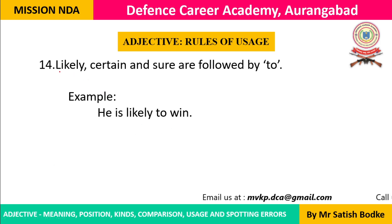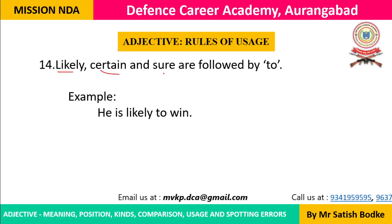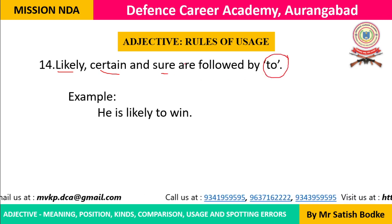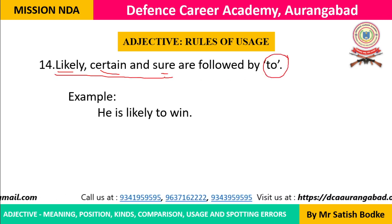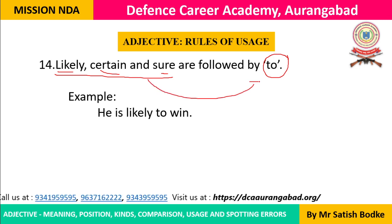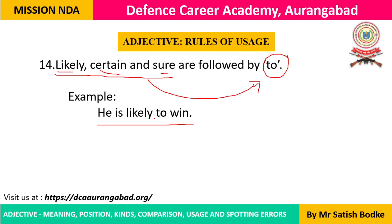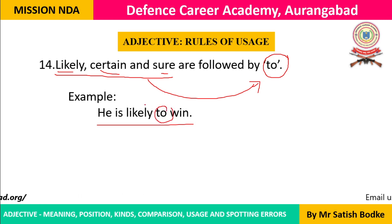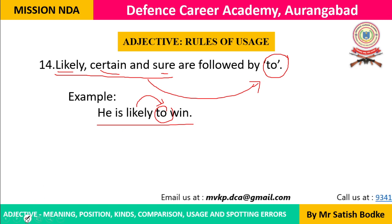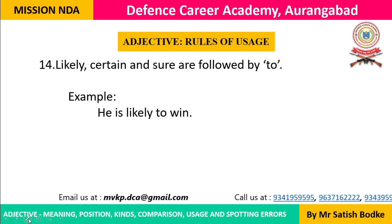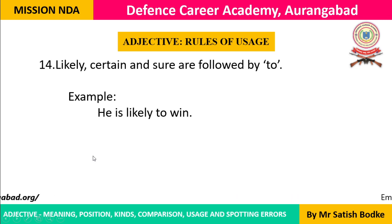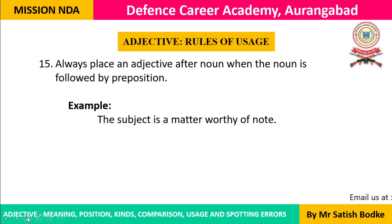Rule 14: Some adjectives like likely, certain, and sure are always followed by to. For example: 'He is likely to win' — likely is followed by the preposition to. These three adjectives compulsorily take to after them.